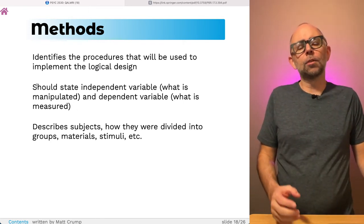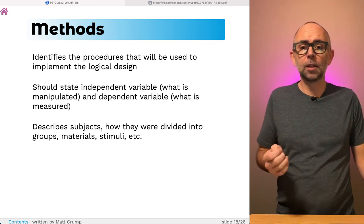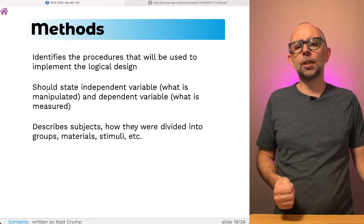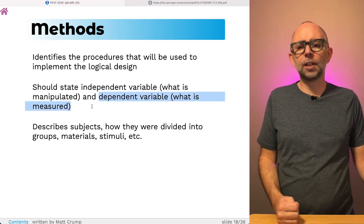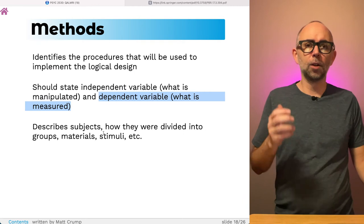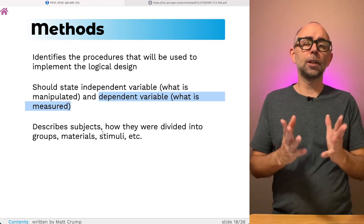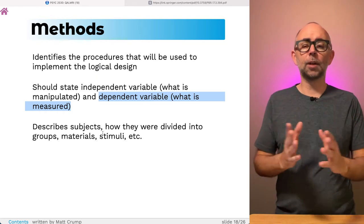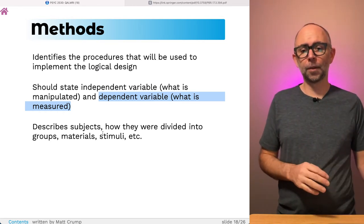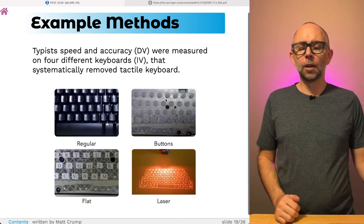In general, the methods section should state what the independent variable is, that is the manipulation in the experiment, as well as the dependent variable, that's what is measured. It also describes other things like who the participants were, how they were divided into groups, what were the materials, stimuli, design, apparatus, all these other things.